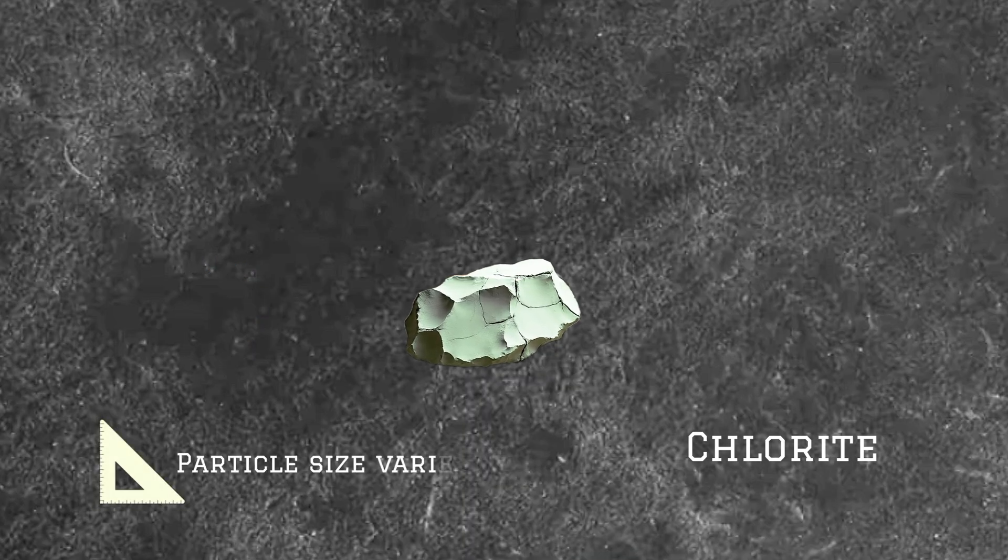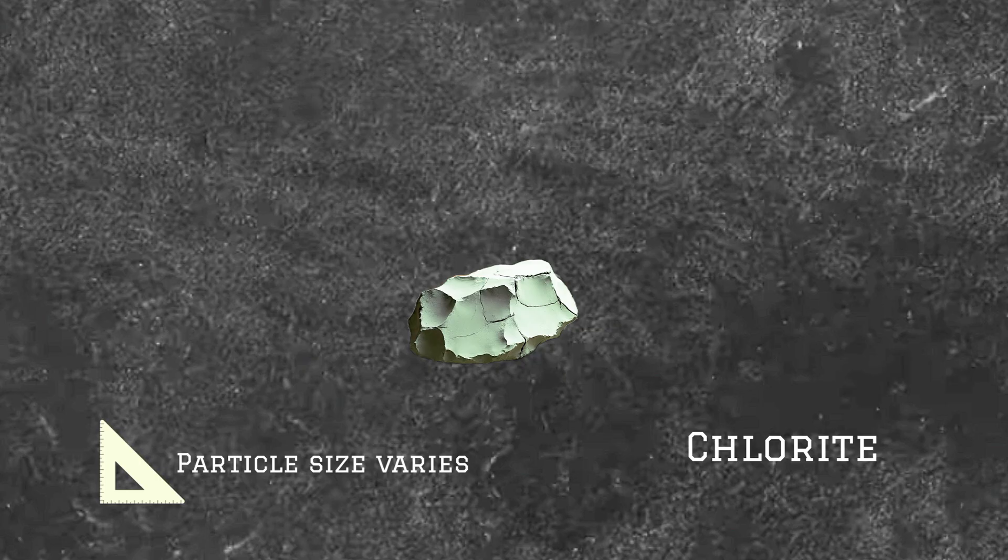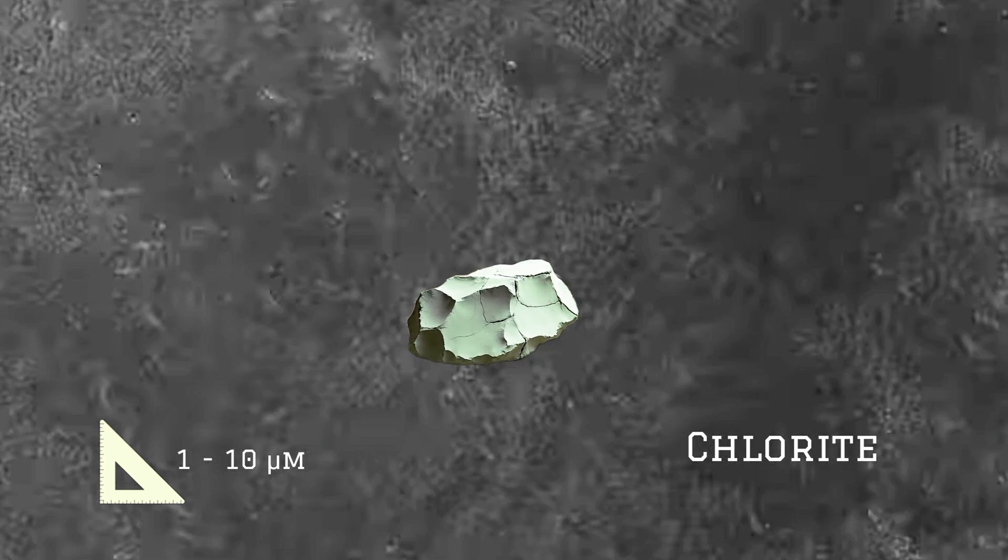The particle size of chlorite can vary, but it generally falls within the clay to fine silt range, typically from 1 to 10 micrometers.